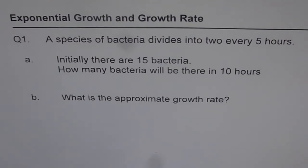Question number 1: A species of bacteria divides into 2 every 5 hours. It has 2 parts. Part A is initially there are 15 bacteria. How many bacteria will be there in 10 hours? And part B is what is the approximate growth rate?